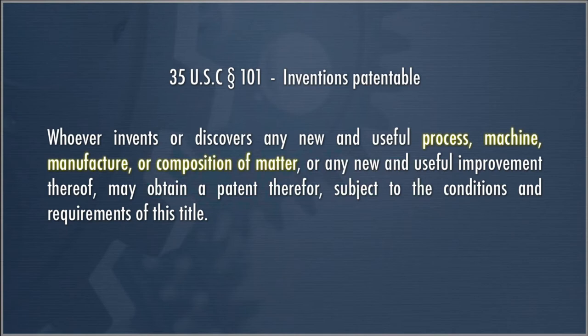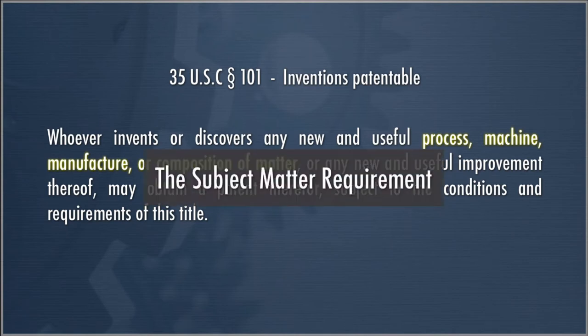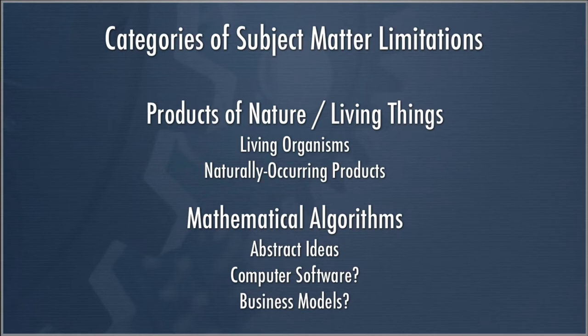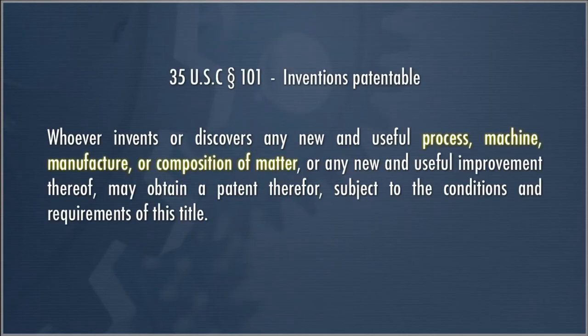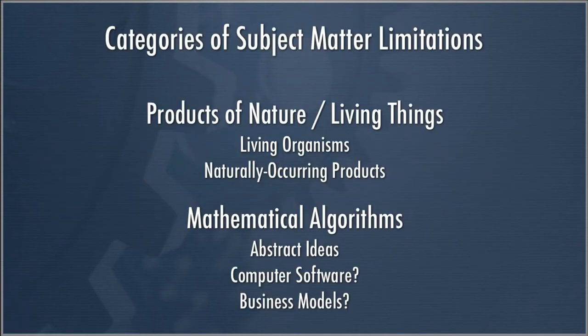However broad the statutory categories are, the courts — in particular the Supreme Court — over several decades have developed two different categories of limitations on subject matter. The first limitation, which we'll talk about in this class, is the products of nature or living things limitation, including living organisms or naturally occurring products. Can those things be patented? Generally we think no, and we'll discuss exactly what we mean by products of nature or living things.